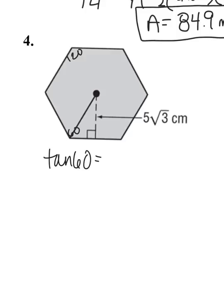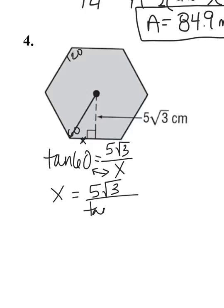So tangent of 60. This time I'm not putting an X on top. I know what that number is. But on the bottom, I'm going to put the X, which is this piece right here. Remember, it's only half of that side. So I'm going to cross multiply divide these two switch places. So X equals 5 square roots of 3 divided by tangent of 60. X equals 5. So this is 5.